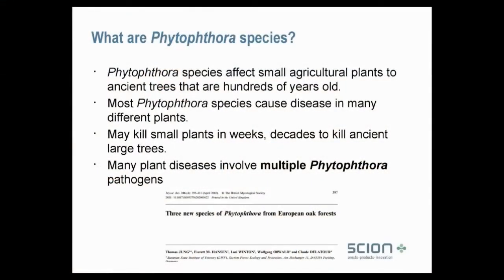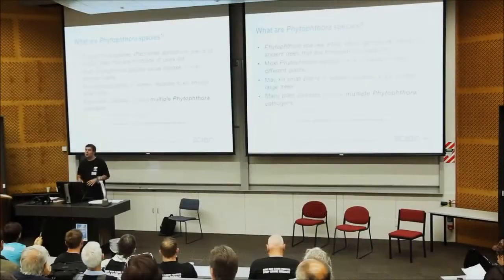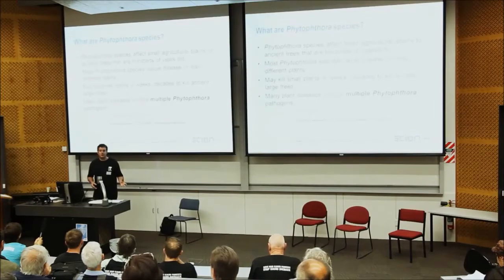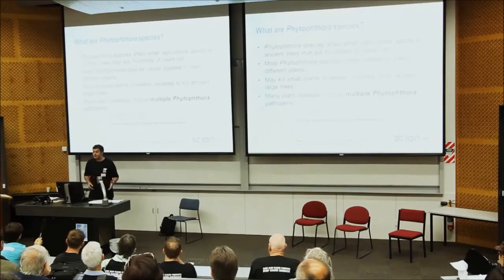Many plant diseases throughout the world involve multiple phytophthora species. We know that many diseases within Western Australia that we thought were only caused by one phytophthora species — we now know there are many other significant phytophthora species also involved in these tree declines. So it's important to be aware that many forest diseases involve many different phytophthora species.